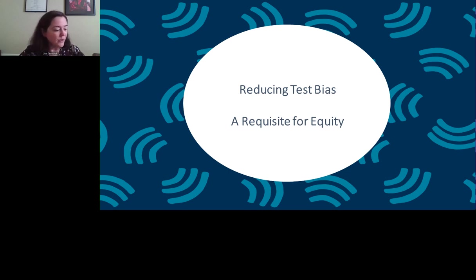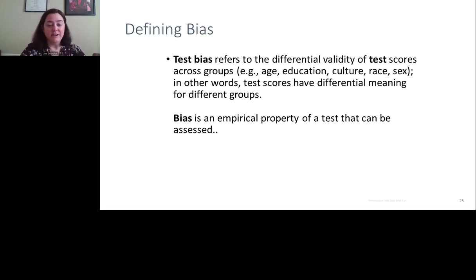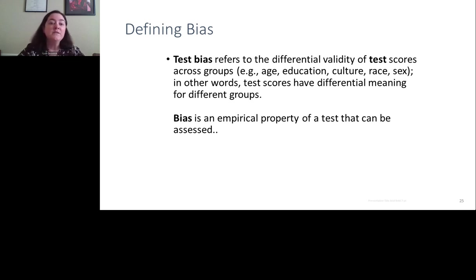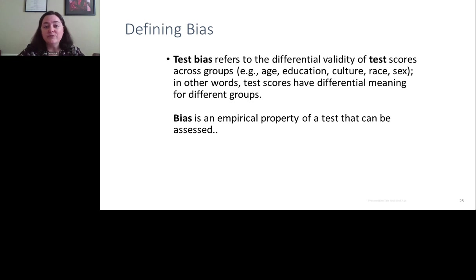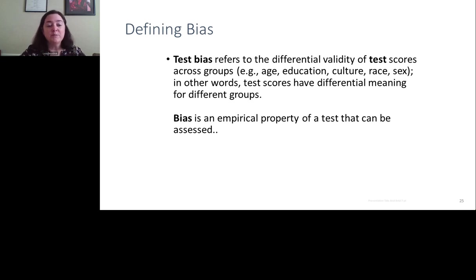When we're developing tests now, one of our biggest goals is making sure that our tests are as unbiased as we can create them. All tests are kind of created within a culture in which they're intended to be used, so we try to minimize test bias in development. Test bias refers to the differential validity of test scores across groups — different ages, education backgrounds, cultures, racial backgrounds, and gender. These test scores are differentially valid across these groups and can therefore be considered to have different meanings within those groups. Bias is something that we can empirically test.